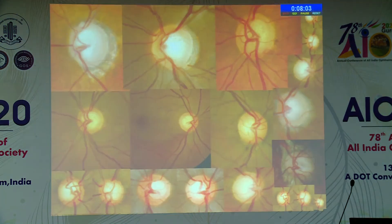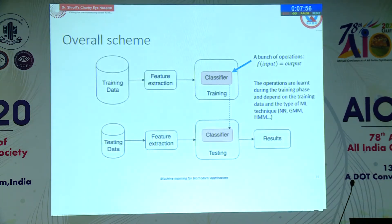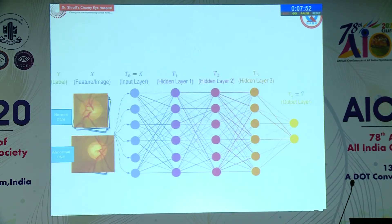Take it a little more narrow — deep learning. You feed in a huge amount of data, you train the machine, and then you test it. You have various neural networks, hidden and non-hidden, and you label the data: this is a normal optic nerve head, and this is an abnormal optic nerve head. The machine will then tell you which is normal and which is abnormal.